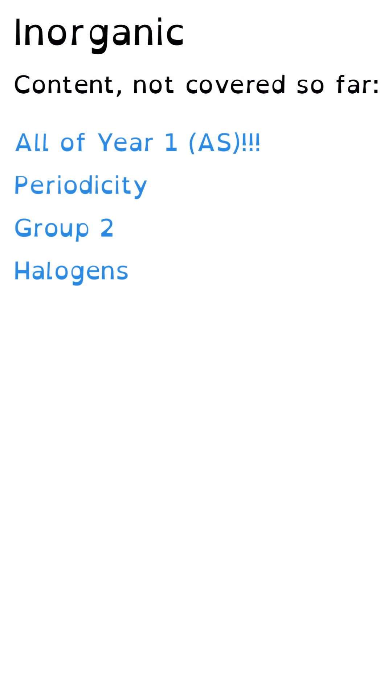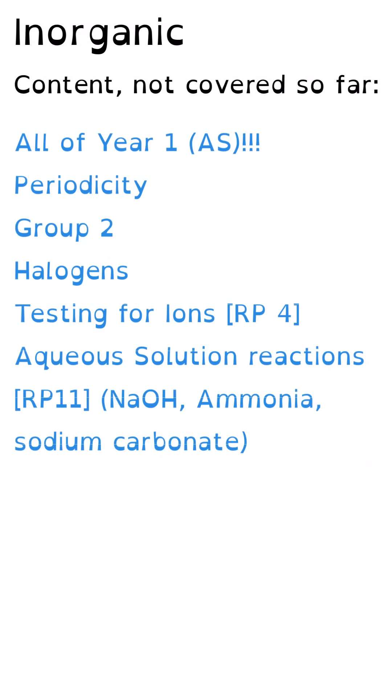No periodicity, no group 2, no halogens. And therefore also no required practical 4 testing for ions. There was quite a bit of year 2 inorganic chemistry but notable by its absence was required practical 11. So that's the different complex ions and what you observe and why when you react them with things such as sodium hydroxide solution, ammonia solution and sodium carbonate solution. There wasn't loads about transition metals. If you were to prioritize something from the transition metals topic you might look at catalysis but this could just be simply a multiple choice question rather than a long question that was standalone about catalysis.